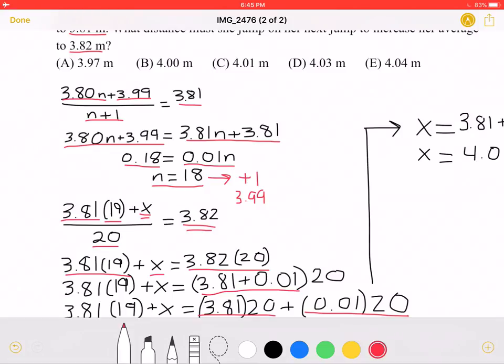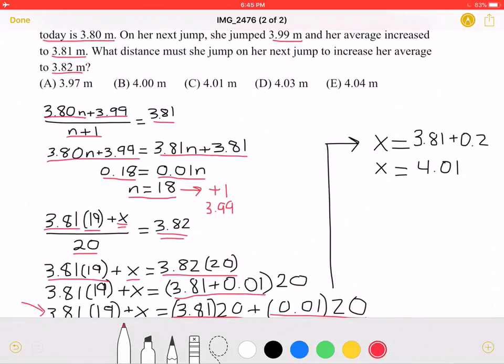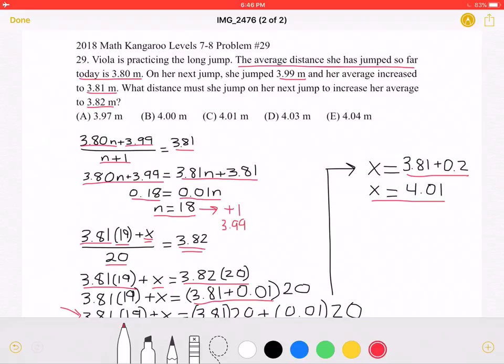It's easier that way because on this side we have 3.81 times 19. So if we subtract 3.81 times 19 from both sides, we would get that x equals 3.81 plus 0.2. That means x equals 4.01. This is answer choice C.